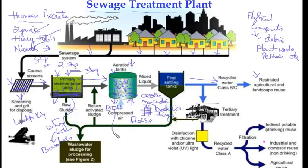Biochemical oxygen demand, or BOD, is a measuring unit for the rate of pollutants. The amount of pollution present in sewage is calculated by BOD. It refers to the amount of oxygen that would be consumed if all the organic matter in one litre of water were oxidized by bacteria. BOD is high in polluted water and low in less-polluted water.